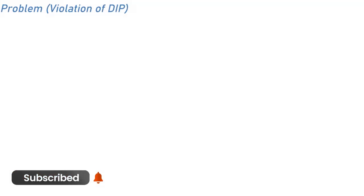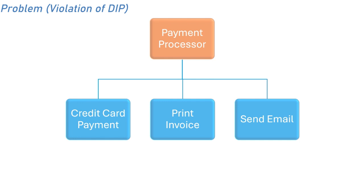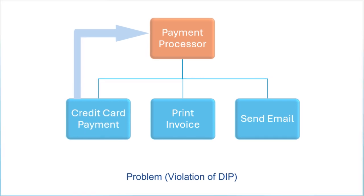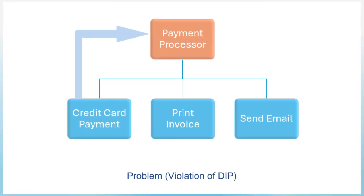Imagine you have a payment processor, the main part of your program, that directly relies on credit card payment, a specific method of payment. This means the payment processor is tightly connected to the details of how credit card payments work. If you ever need to change how payments are processed or add new payment methods, like PayPal or bank transfer, you'd have to modify the payment processor itself, which can make your system harder to maintain and less flexible. This tight connection is what we call tight coupling, and it's a problem because the main part of the system depends too much on the specifics of one part.